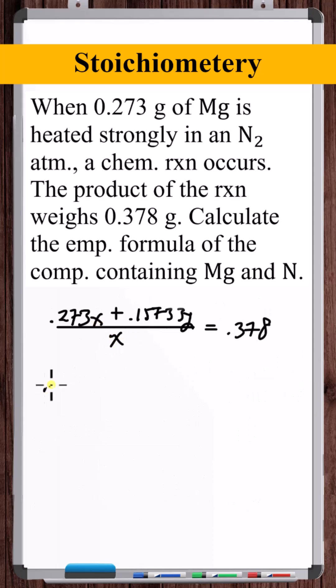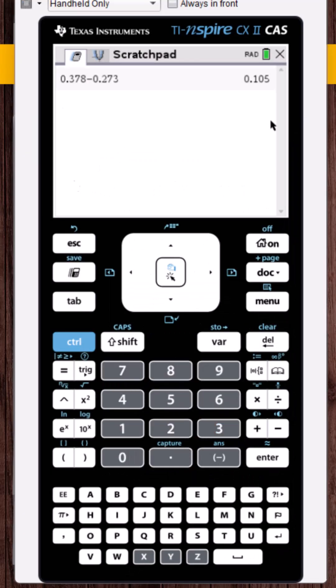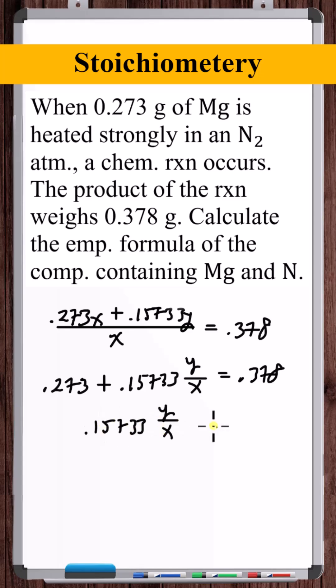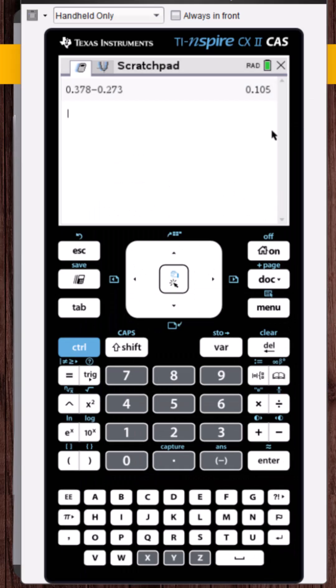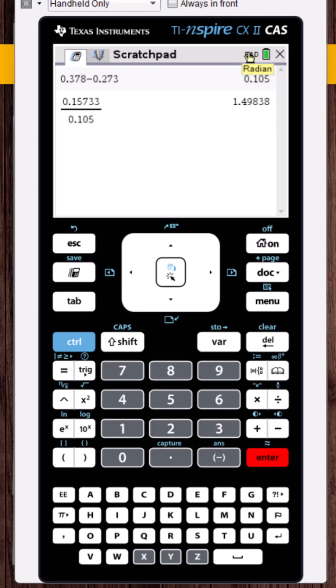Now let's divide X by each term in the numerator. Now let's subtract 0.273 from both sides: 0.105. Now let's divide both sides by 0.105: 1.5.